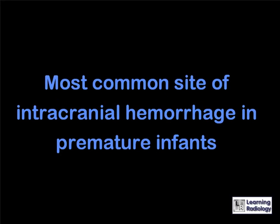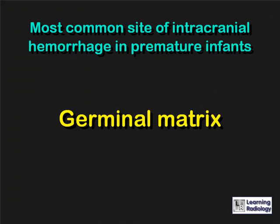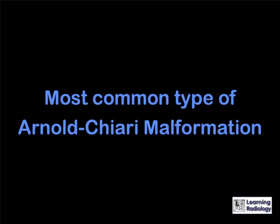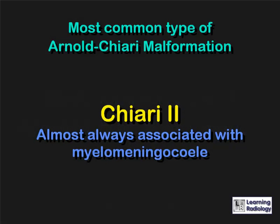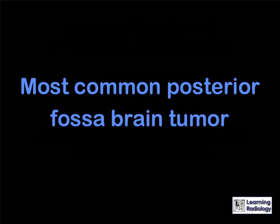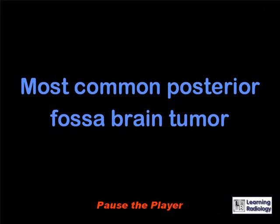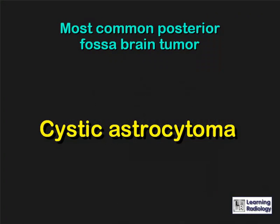Neuroradiology. What is the most common site of intracranial hemorrhage in premature infants? The germinal matrix. What is the most common type of Arnold Chiari malformation? A Chiari II, which is almost always associated with myelomeningocele. What is the most common posterior fossa brain tumor in children? A cystic astrocytoma.